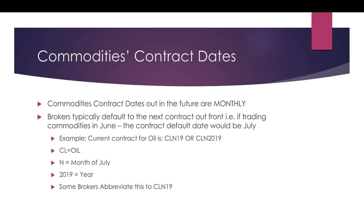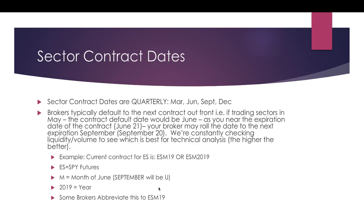The current contract for oil is CLN19 or CLN 2019. CL indicates oil, N is the month of July, and 2019 is the year. TradingView uses CLN 2019, for example, and TD Ameritrade uses CLN19. Let me show you what this looks like in TradingView.